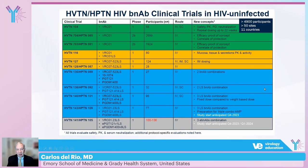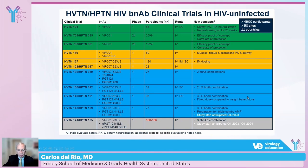HIV trials with monoclonal antibodies in HIV-uninfected individuals are summarized in this table. In green are HVTN 104, 703, and 704, conducted with the VRC01 antibody — a phase 1 and then phase 2b studies with over 4,900 participants across 50 sites in 11 countries. There are also other studies with different monoclonal antibodies, mostly phase 1, and importantly, studies looking at combinations of two or three monoclonal antibodies for this same purpose.